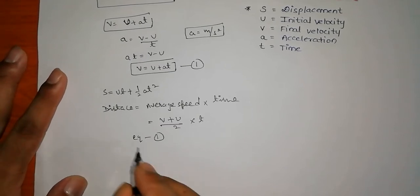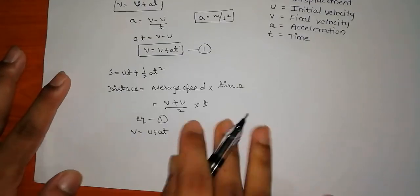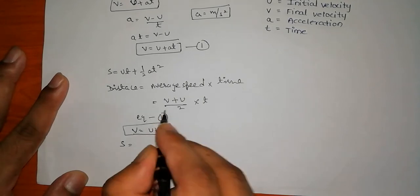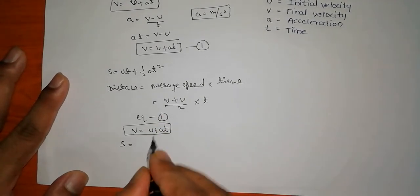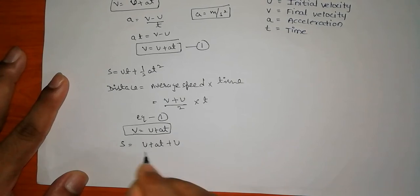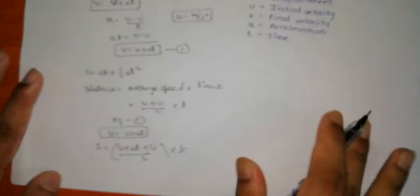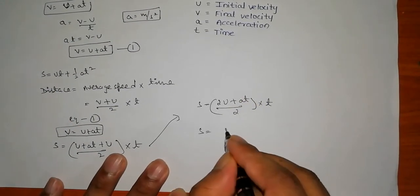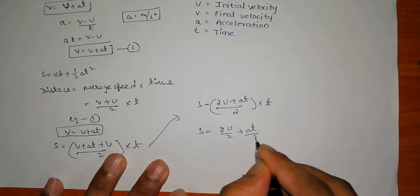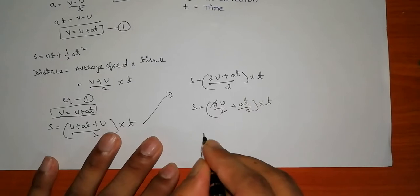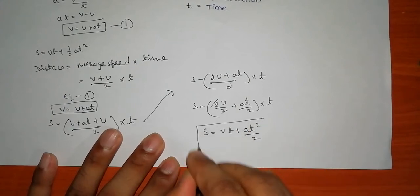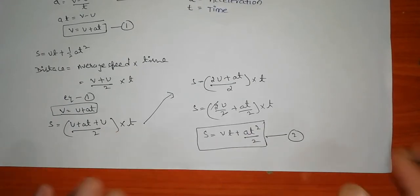From equation 1, V = U + AT. Substituting V into the average speed formula gives S = (U + AT + U) / 2 × T, which equals (2U + AT) / 2 × T. Simplifying: S = (2U/2 + AT/2) × T = UT + AT²/2. So the second equation S = UT + ½AT² is derived.